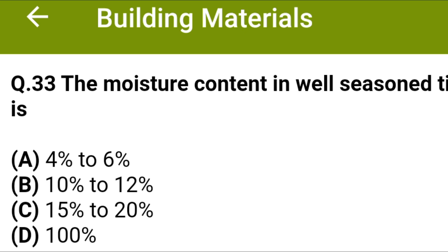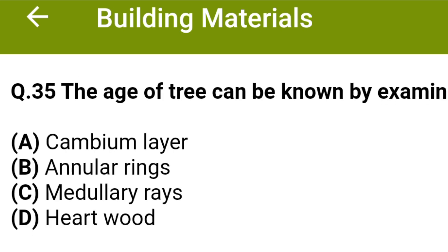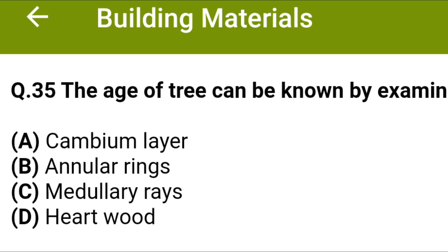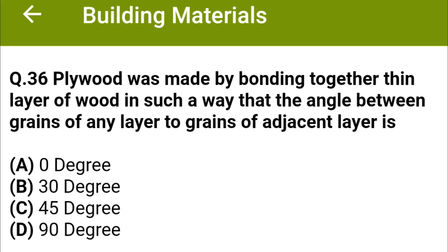The moisture content in well-seasoned timber is Option A 4% to 6%, Option B 10% to 12%, Option C 15% to 20%, Option D 100%. The correct answer is Option B, 10% to 12%. The age of a tree can be known by examining Option A cambium layer, Option B annular rings, Option C medullary rays, Option D heartwood. The correct answer is Option B, annular rings. Plywood is made by bonding together thin layers of wood such that the angle between grains of any layer to grains of the adjacent layer is Option A 0°, Option B 30°, Option C 45°, Option D 90°. The correct answer is Option D, 90°.